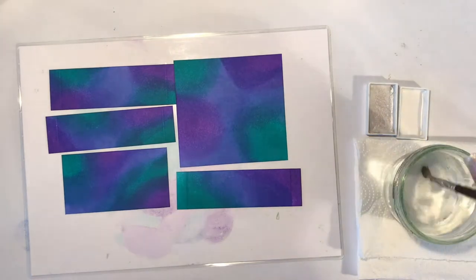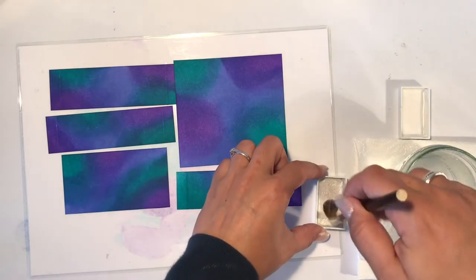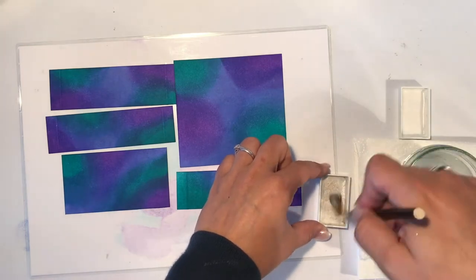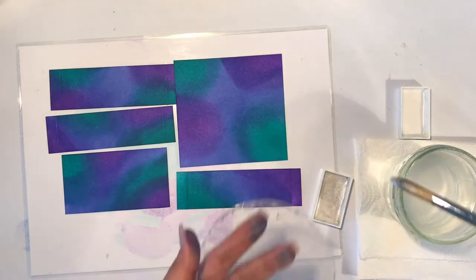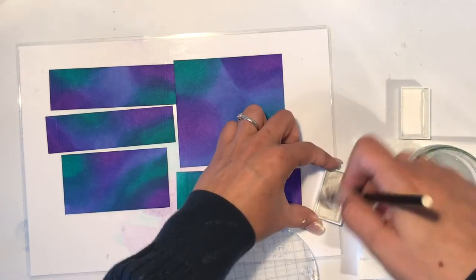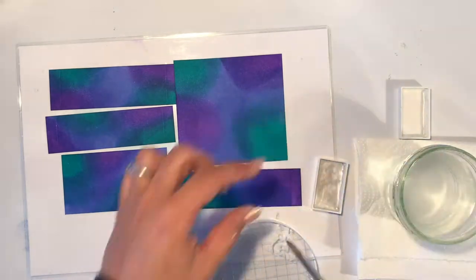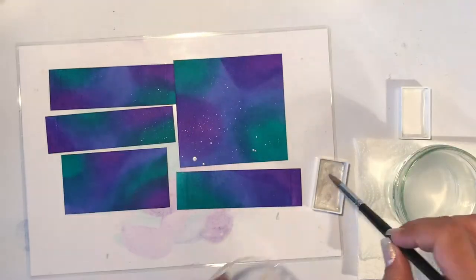Now that my panel is full of distress inks I want to create some stars. Here for I use my Gansai Tambi watercolors. I picked up the color silver and the white one and just splattered it all over my panel.